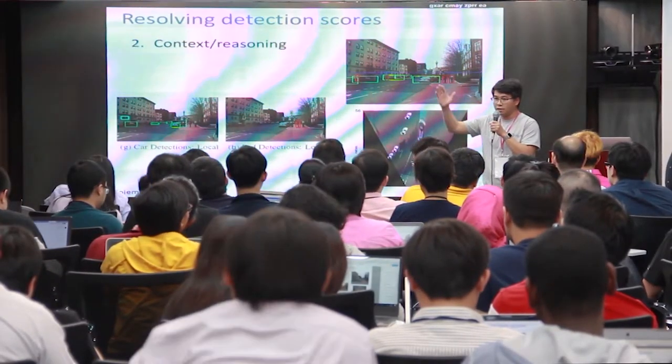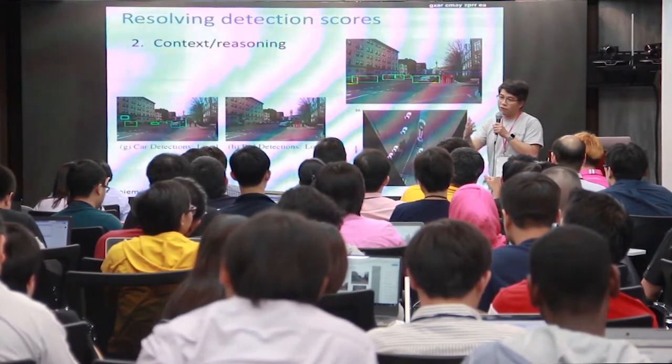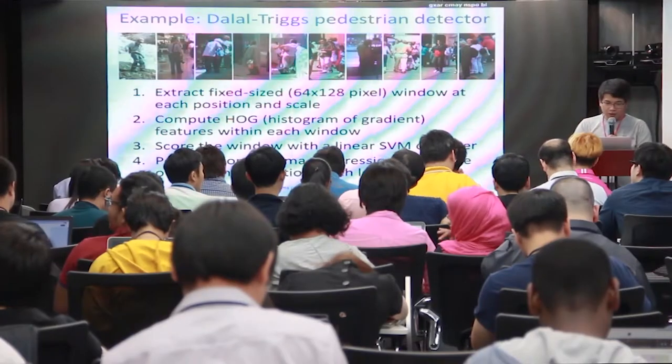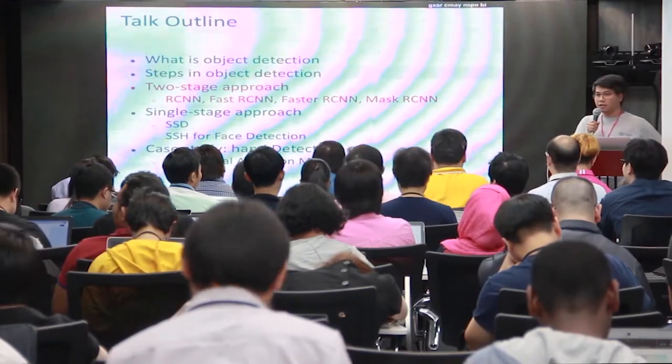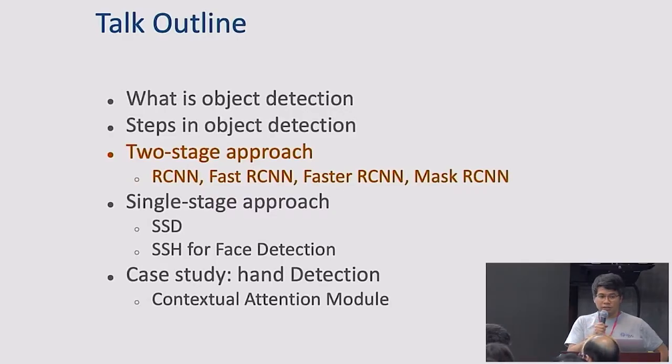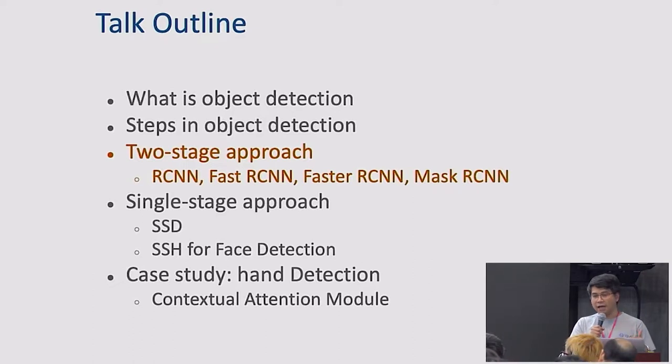Context-based removal is automatic but uses heuristics. For example, suppose you're on a street in Bangkok — you should not see a pedestrian on the upper half of the image. Some methods automatically figure out the ground plane of the street and the façade of the building. So in summary, I covered what object detection is and the four steps: specify an object model, generate hypotheses, score hypotheses, and resolve detections. For the rest of this lecture: a two-stage approach, a single-stage approach, and a case study on building a hand detector.